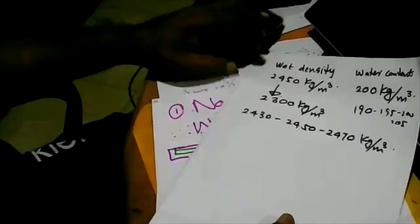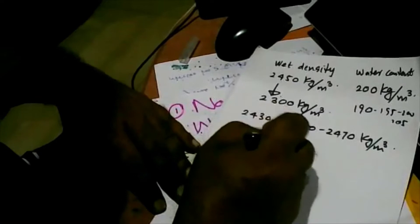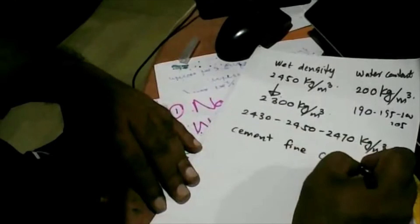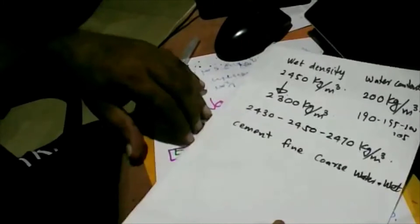So there are two parameters. If you look at concrete, we have cement, fine aggregate, coarse aggregate, and water, and we get wet concrete as a result.